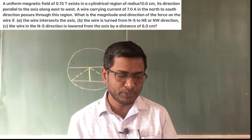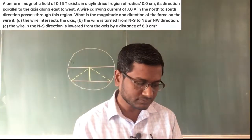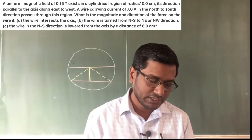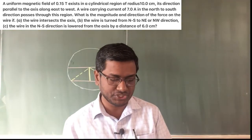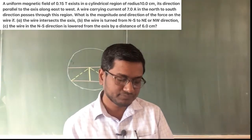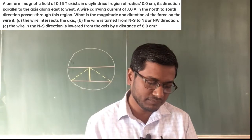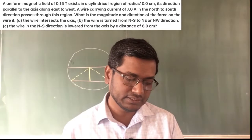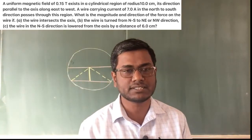A uniform magnetic field of 0.15 Tesla exists in a cylindrical region of radius 10 cm, its direction being parallel to the axis along east to west. A wire carrying a current of 7 Ampere in the north to south direction passes through this region. Three conditions are given: the wire intersects the axis; the wire is turned from north-south to north-east or north-west direction; and the wire in the north-south direction is lowered from the axis by a distance of 6 cm.